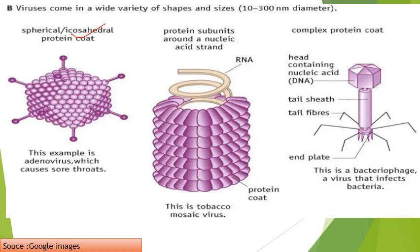Examples of these symmetries: icosahedral symmetry is shown by adenovirus, which mostly causes sore throat. The most commonly studied helical virus is tobacco mosaic virus (TMV). The third type — complex symmetry — is shown by bacteriophages, which are viruses that infect bacteria.